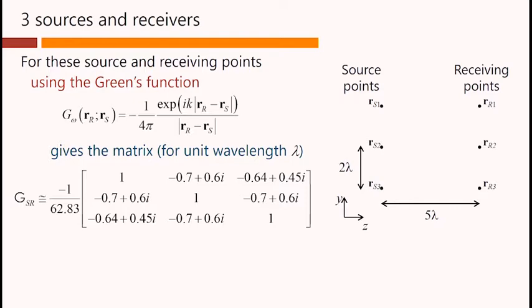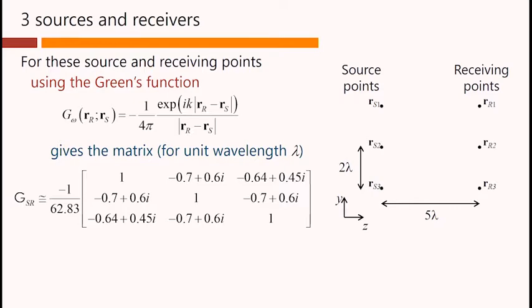And that gives a matrix that looks like this, presuming unit wavelength for simplicity here. This contains all the coefficients coupling the source points to the corresponding receiving points. Note, incidentally, that the sum of the modulus squared of the matrix elements in this matrix is the relevant sum rule here. So we get a specific answer for that, a specific number.